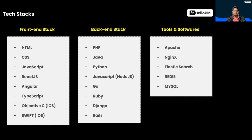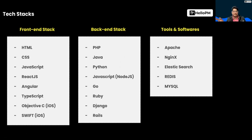Second is the back-end stack. At the back-end, we have PHP — a very old and popular language. If you've heard of WordPress, WordPress is written in PHP. Then we have Java, Python, and JavaScript. JavaScript is the single language that can be used at both the server and the front-end. Then we have Go and Ruby.